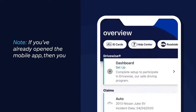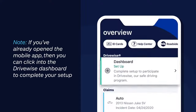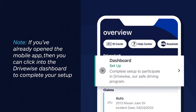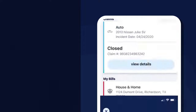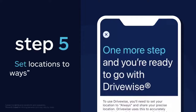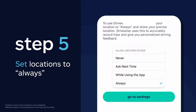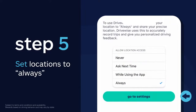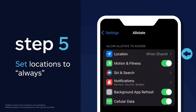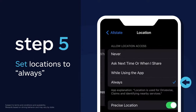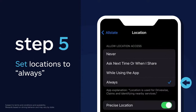And if you've already opened the mobile app, then you can click into the DriveWise dashboard to complete your setup. For this step, make sure your locations are set to Always. This ensures that all of your trips are being captured and you'll receive the maximum savings for your safe driving.